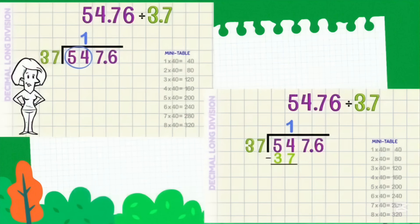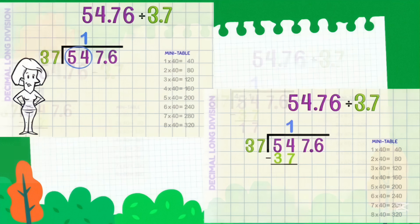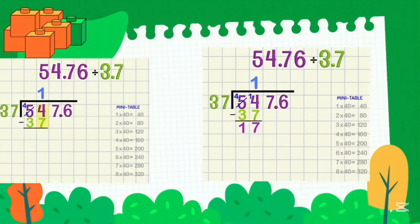Now let's divide. How many 37s are in 54? There is only 1. Put 37 under 54 and now we subtract to find the remainder. Can't do it — I need to borrow 10. Now we have 14 minus 7, result is 7. 4 minus 3 is 1. The remainder is 17.